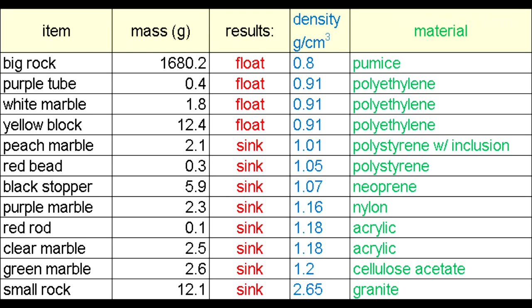And why did the most massive object, the big rock, float in water? Well, it's because it has a very low density, 0.8 grams per cubic centimeter. That material is pumice. Pumice is a volcanic igneous rock that is very low in density, and therefore floats in water.